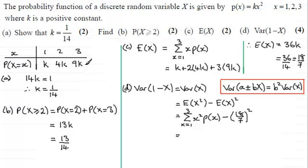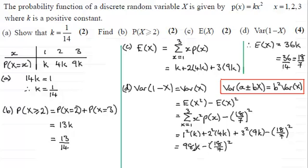So it will be x squared times the probability of x. This is where the probability distribution table comes in handy. It's 1 squared times k, plus 2 squared times the probability 4k, and then plus 3 squared multiplied by the probability 9k. And we take away 18/7ths all squared. If you work this out, you end up with a total in the first three terms of 98k, minus 18/7ths all squared. And taking k to be 1/14th, you should find you end up with 19/49ths.